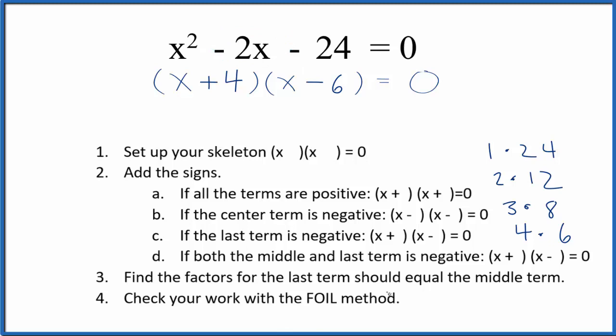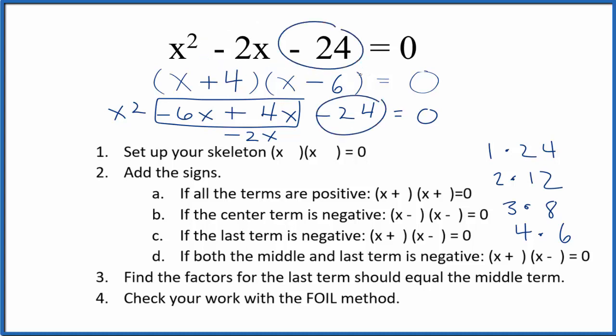Let's check our work using the FOIL method, and when we do that we get this x squared, and then we have minus 6 plus 4x. That would give us minus 2x just like we have up here, then we have minus 24. So we know we've done this correctly.